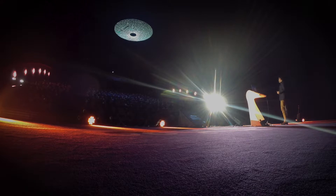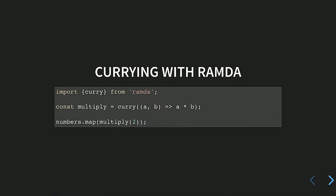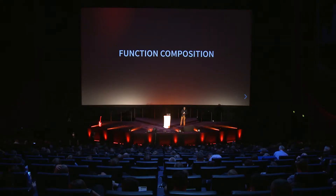You don't need to curry all your functions manually — you can use a library called Ramda.js. There is a generic curry function in Ramda which you can use to curry any multi-argument function. That was the first tool. The second one is called function composition.